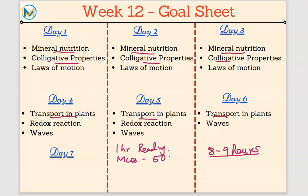For Chemistry, Colligative Properties has been allotted three days. If you're not able to complete it in three days, you can use the sixth day for Colligative Properties. Otherwise, three days should be sufficient — try stretching your limit and aim to complete it in three days.